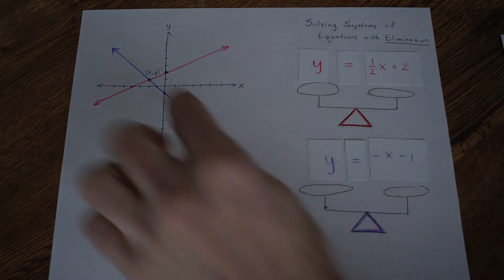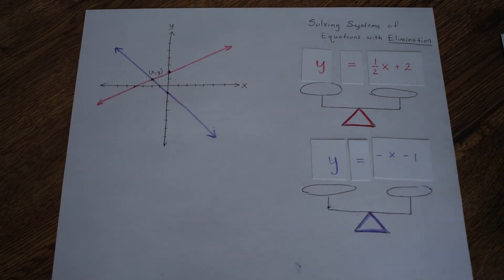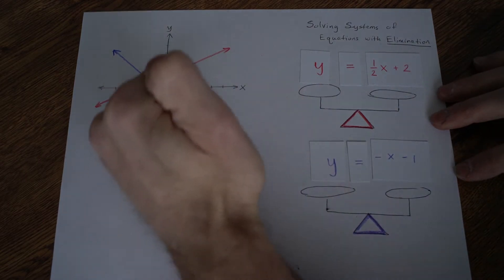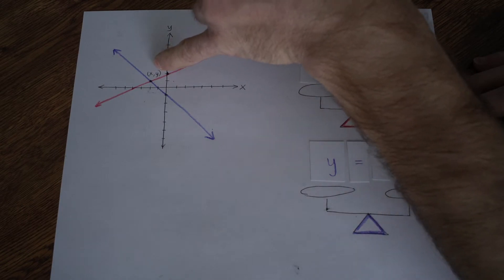It's an algebra strategy for finding out where those lines cross. If you haven't watched my previous video on solving systems of equations with substitution, that kind of sets up these problems. We already know that the solution where they cross is negative 2 and then height of 1.